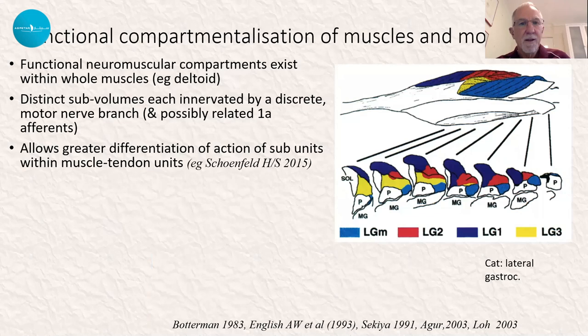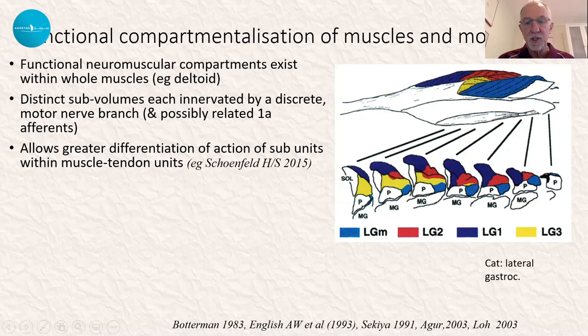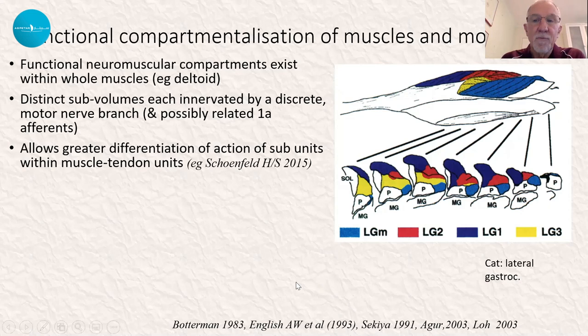Another very interesting concept within the calf musculature is that of described functional compartmentalization of the muscles or subsets within these muscles, and also the motor nerve supply. This was described first by Botterman, who looked at the lateral gastrocnemius, and then later by English, who looked at soleus — both of these studies were in rats. It really highlights the fact that we've got discrete areas within all of these muscles which have their own motor nerve branch and their own discrete function.